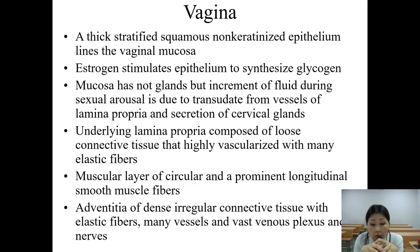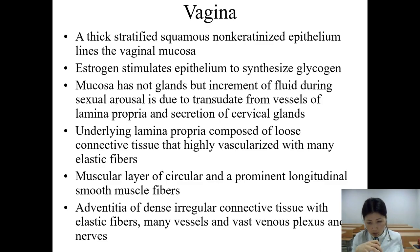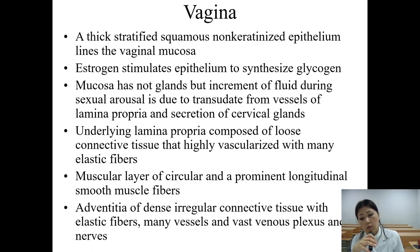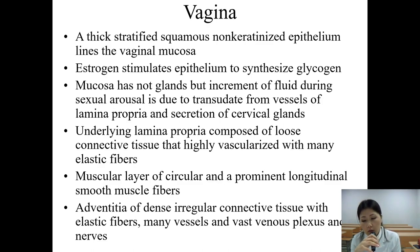The adventitia of the vagina is composed of dense regular connective tissue with elastic fibers, many vessels, and numerous vast venous plexuses and nerves.